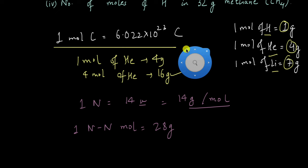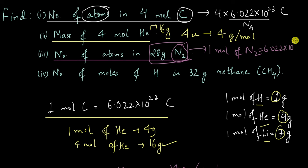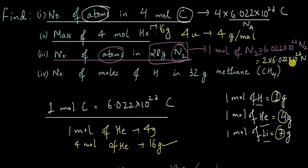So if one mole of nitrogen molecules has 28 grams, and we are asked for the number of atoms in 28 grams of nitrogen, we have one mole of nitrogen molecules — that is 6.022 × 10²³ nitrogen molecules. But because we are asked for atoms, and we must be careful to notice whether the question asks for atoms or molecules, we multiply by 2: so 2 × 6.022 × 10²³ nitrogen atoms. Each molecule has two atoms, so we simply multiplied by 2.